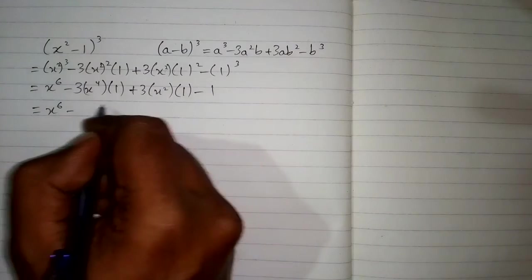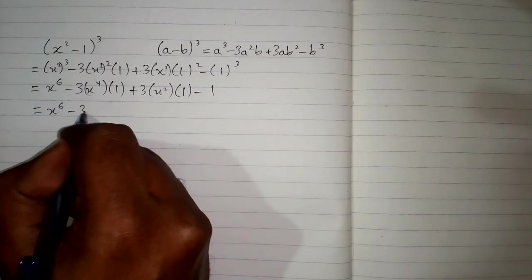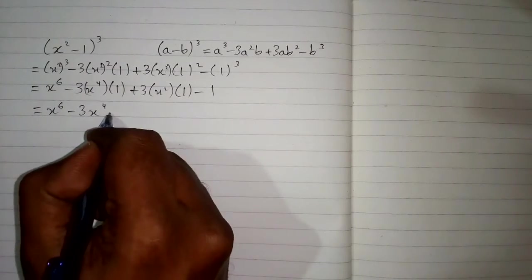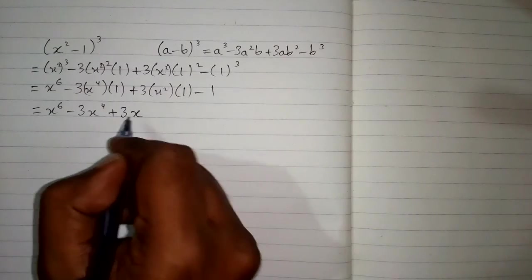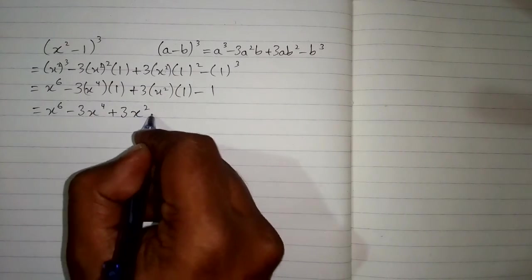Now we have x⁶ minus 3 times 1 is 3x⁴ plus 3 times 1 is again 3, so 3 times x² minus 1.